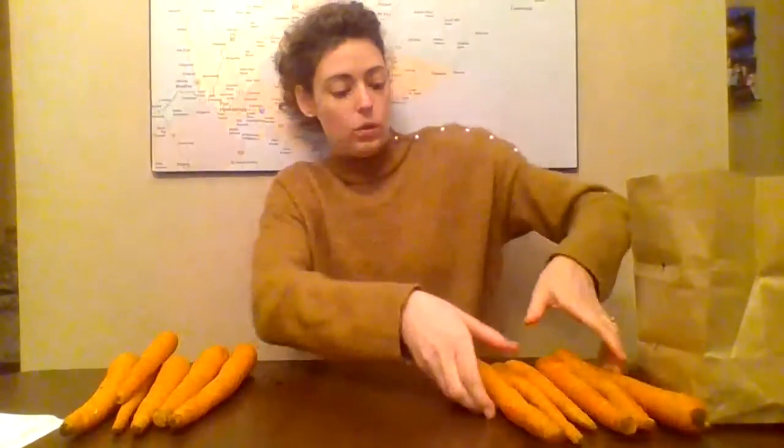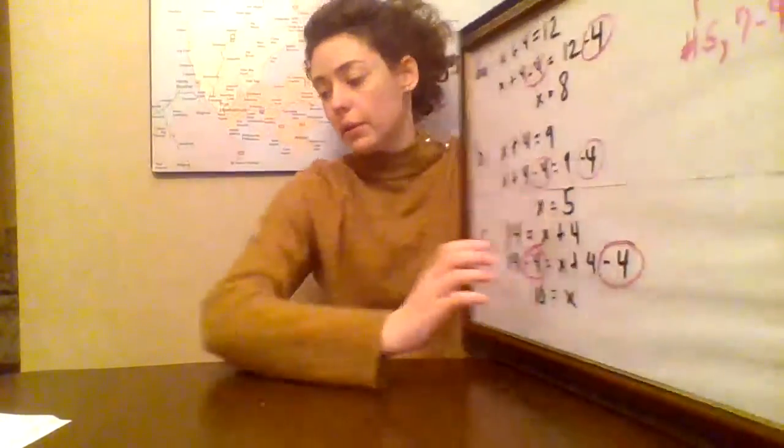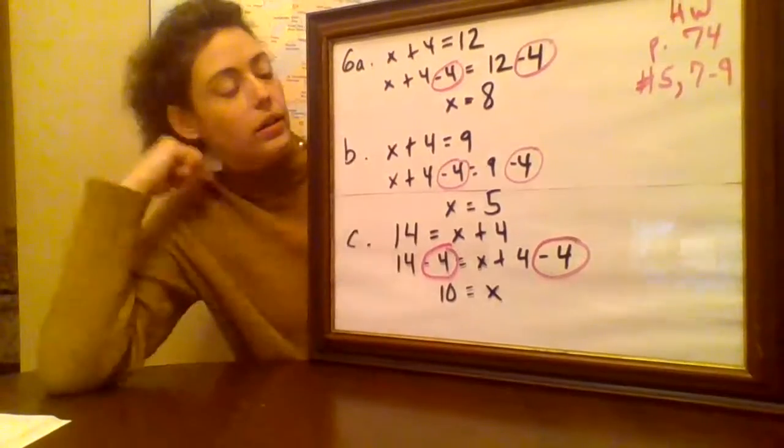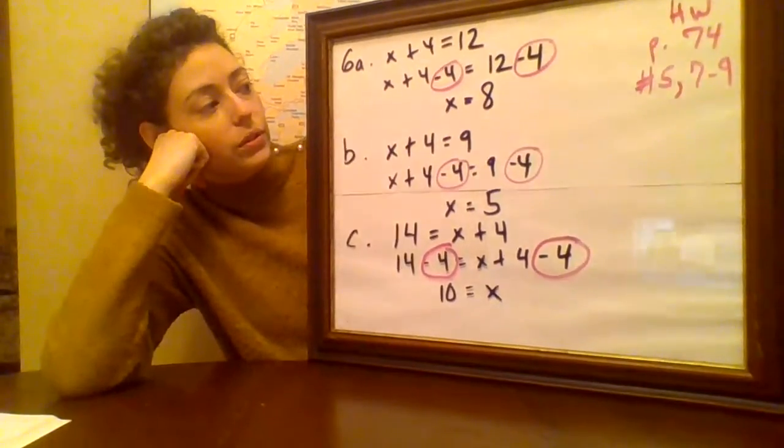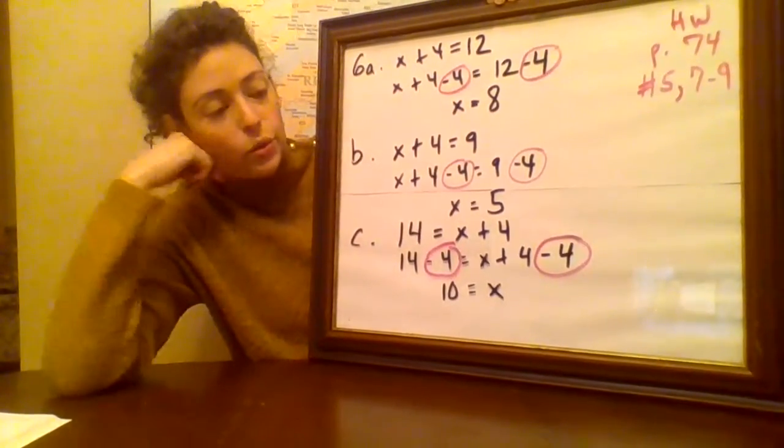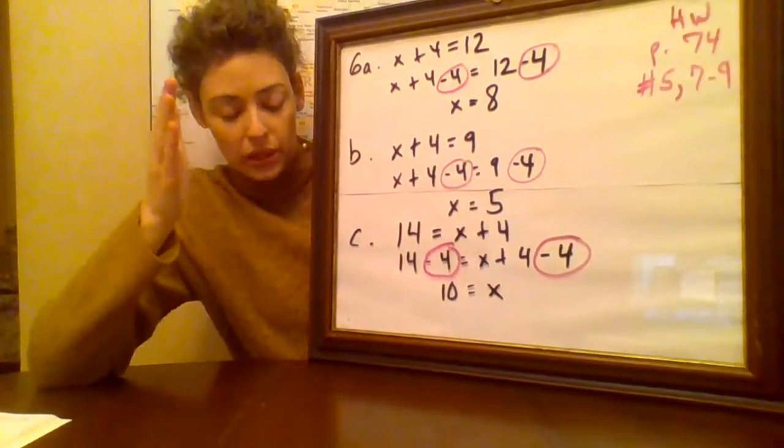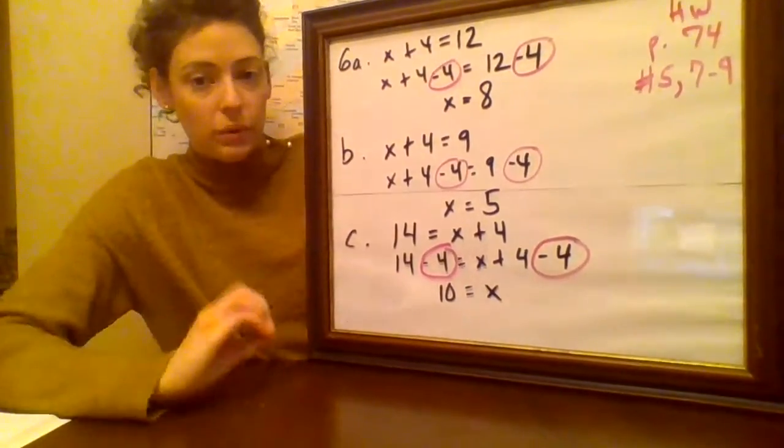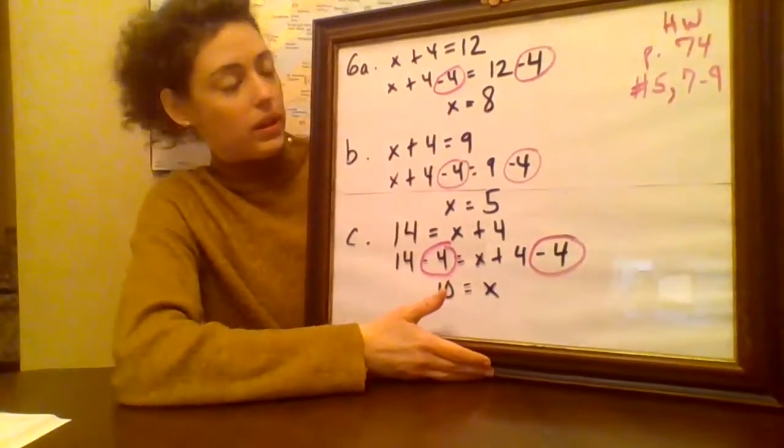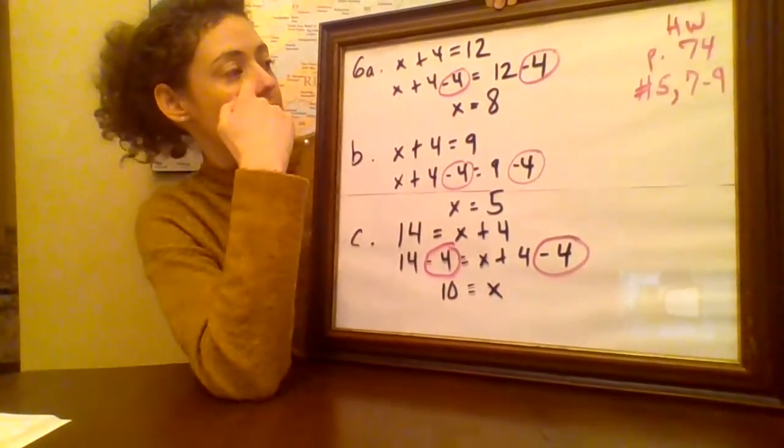So let's look at an equation on my board. We're really doing the same thing here on this board that we were doing with the carrots, but now we are using numbers instead of carrots. If it helps you to use carrots or buttons or whatever, you can do that until you get it in your head, because it's really important that you know things concretely. And then you can start working on it this way with the symbols.